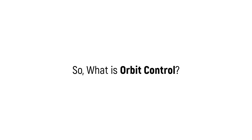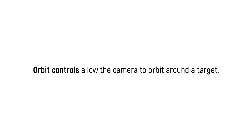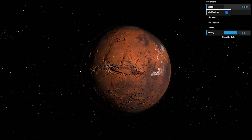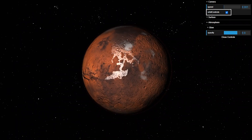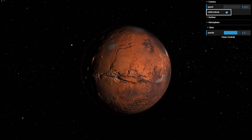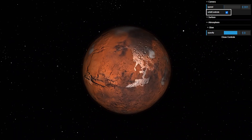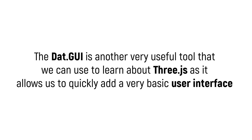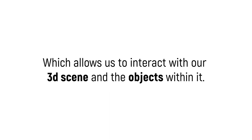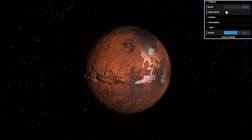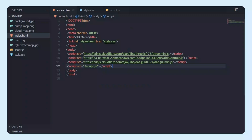OrbitControls allows the camera to orbit around a target — the camera can be controlled and you can rotate objects as well. dat.GUI is a very useful tool for learning Three.js as it allows you to quickly add a basic user interface to interact with the 3D scene and the objects within it. You can see the controls here.